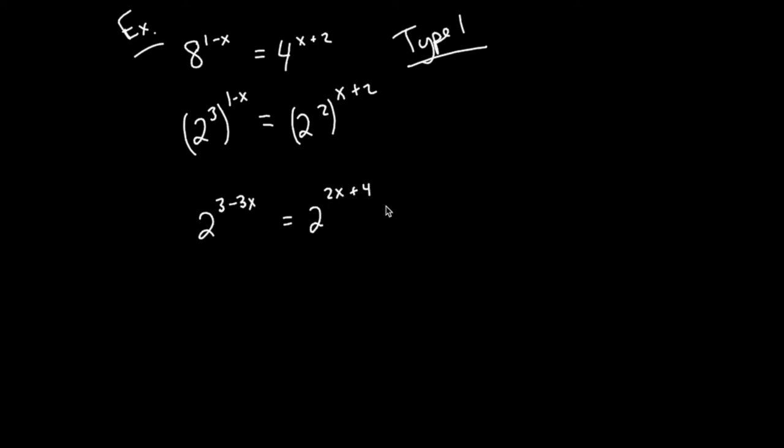And now I have a single base on the left, single term on the right. Both of the bases match. So if these are equal to each other, then that means that the exponents must be equal to each other, and I could drop the bases and solve the rest of this, which is a nice easy kind of thing.